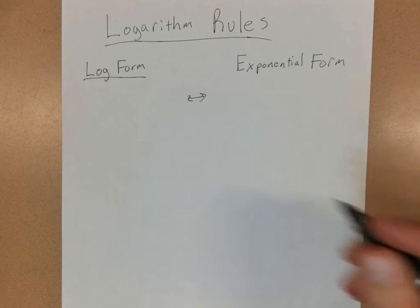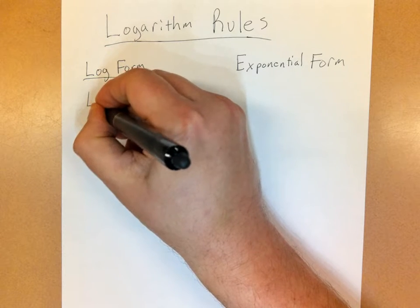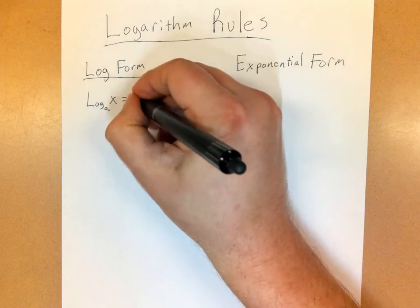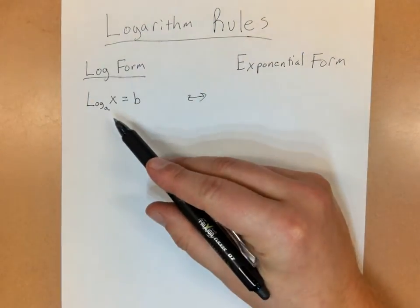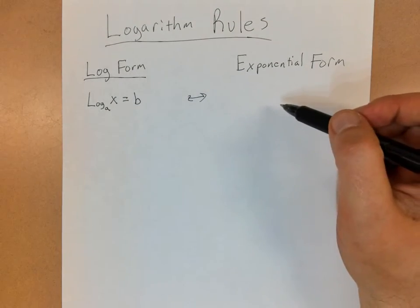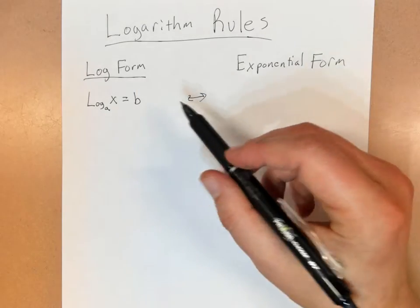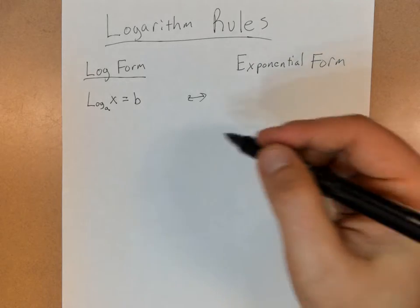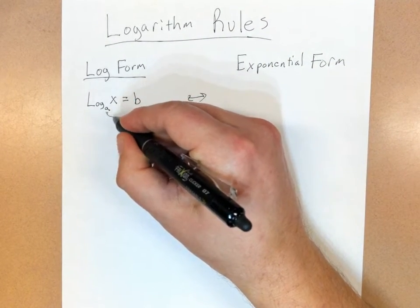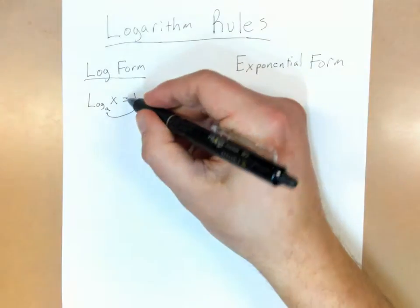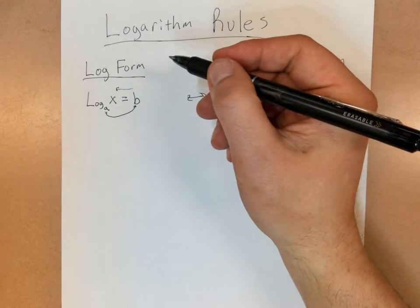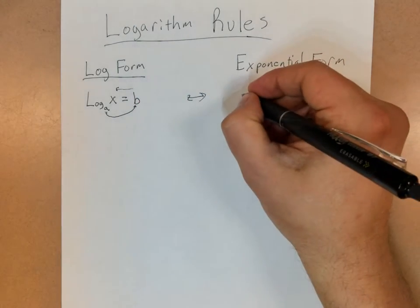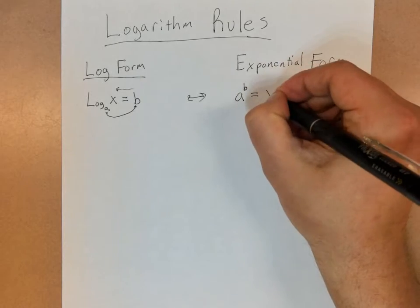So if I have something written out as a log, so I would write this out as the log base a of x equals a number, we'll say b. So if I wanted to take that logarithm right there and convert it into exponential form or vice versa, these are going to be equivalent expressions, just going to look different. So a way to convert it is you're going to take the base here to that power, and that's going to equal whatever you're taking the log of. So I always kind of think of it as a little circle here where you can just kind of go around. So it'll be a to the b power equals x.